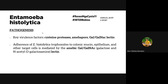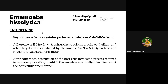After adherence, E. histolytica destroys host cells in a process known as trogocytosis — literally 'nibbling.' The amoeba nibbles off small parts of the live cell. After nibbling, the amoeba digests and then expresses the surface proteins of the eaten human cell on its own surface. This allows it to evade the complement system — the complement thinks the amoeba is part of the body's normal cells.